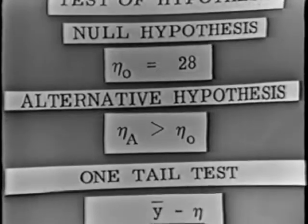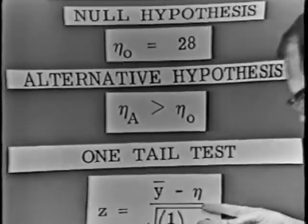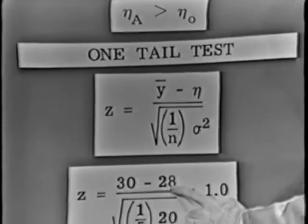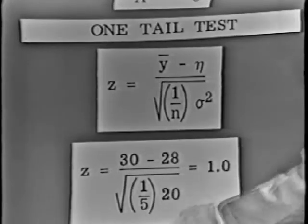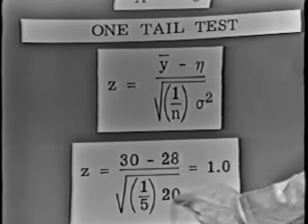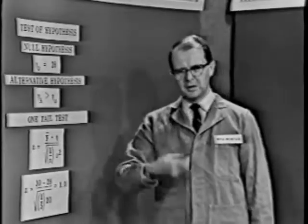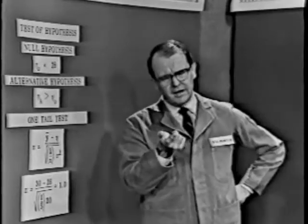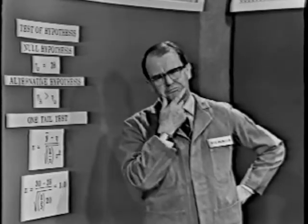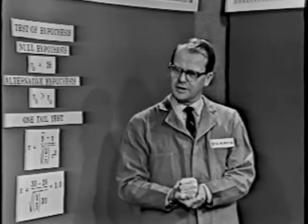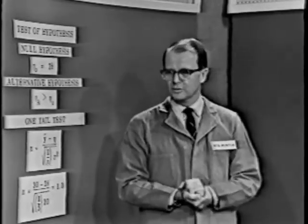We evoke our old friend the normal deviant. When you plug in the necessary data, you'll find the average was 30, the null hypothesis about the mean was 28, and you divide by the square root of the variance of the statistic — one-fifth times 20. Z comes out equal to one. This is a one-tailed test, and the critical value of Z is 1.64. Our observed value of Z is, alas, not larger than 1.64, so the data could not be used to contradict the hypothesis that the mean was equal to 28.